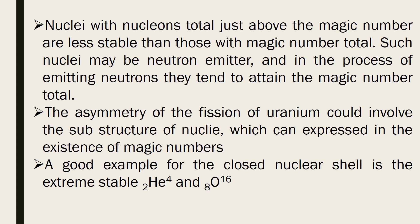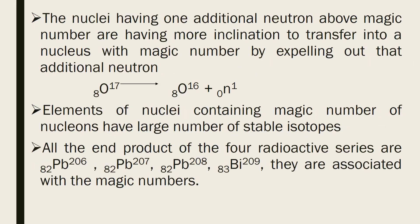Asymmetrical fission of uranium produces daughter elements showing magic numbers. Excellent examples of closed nuclear shells are helium (magic number 2) and oxygen (magic number 8), which are extremely stable — as confirmed by their higher binding energies in the graph. Furthermore, oxygen-17 has one extra neutron above the magic number 8, so it tends to lose that neutron and fall back to the magic number.